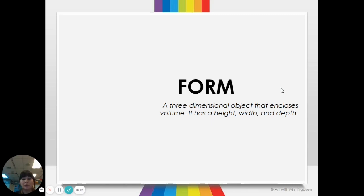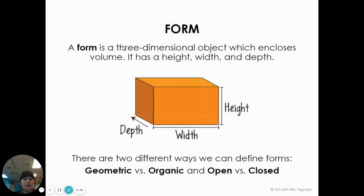Form in art are three-dimensional things. It can be actually three-dimensional or it could be a drawing of something three-dimensional. Those are called forms and it is one of the elements of art, the building blocks of art. A form is three-dimensional which means that it has a width and a height and depth.